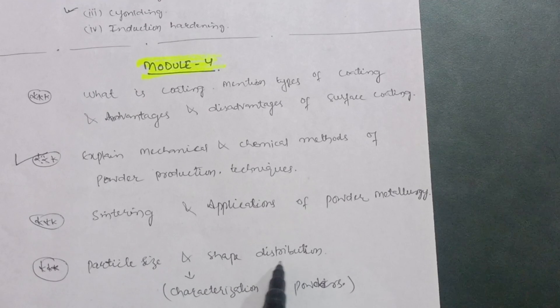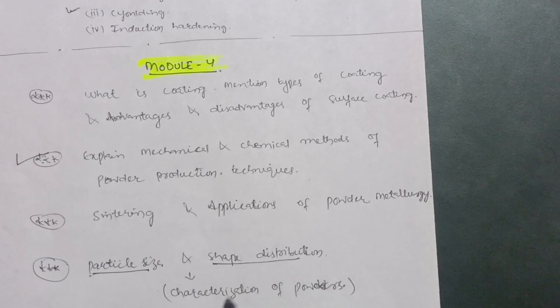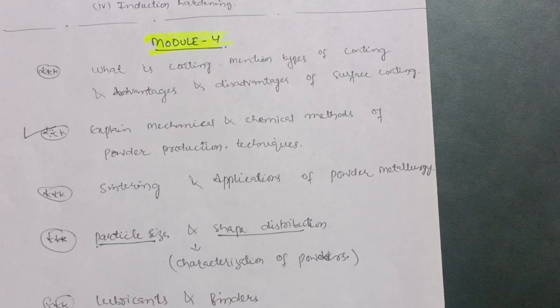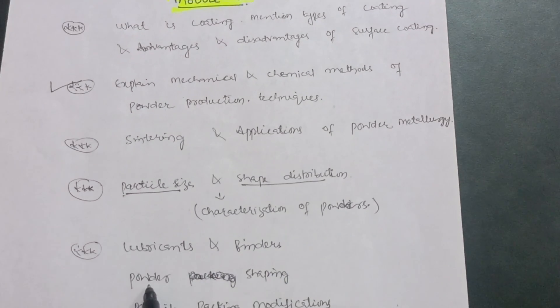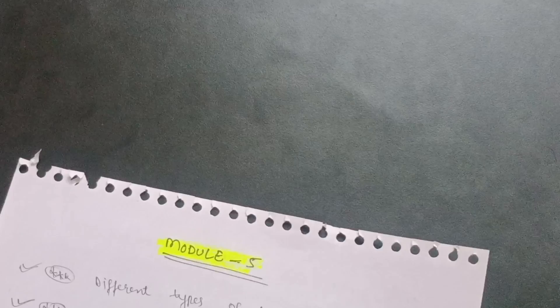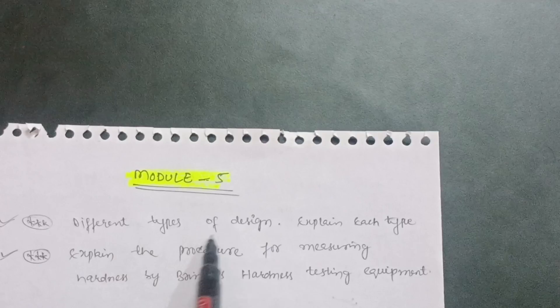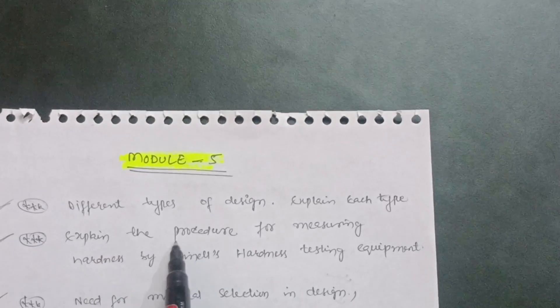Particle size and shape distribution — how it influences the characterization of powders — is another important topic. Also, what are lubricants and binders, powder shaping, and particle packing modifications. Then Module 5, the last module in Material Science, covers different types of design — explain each type.